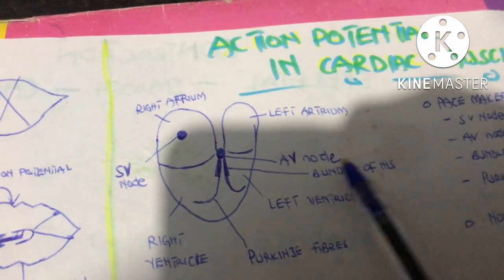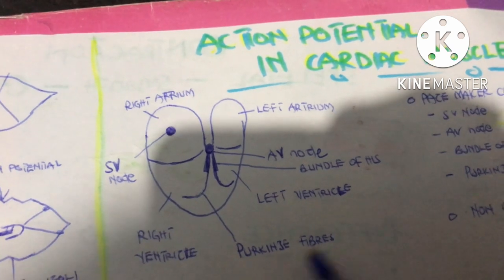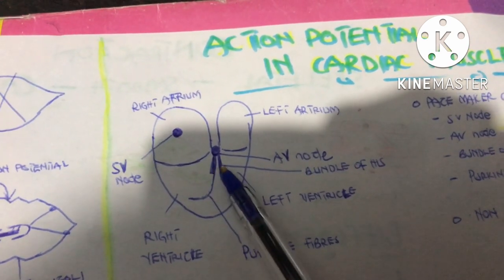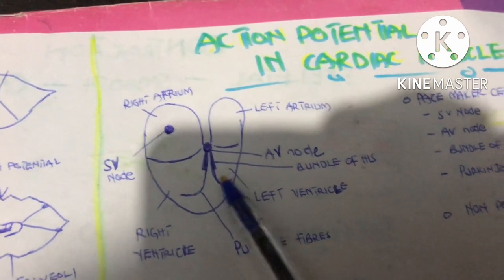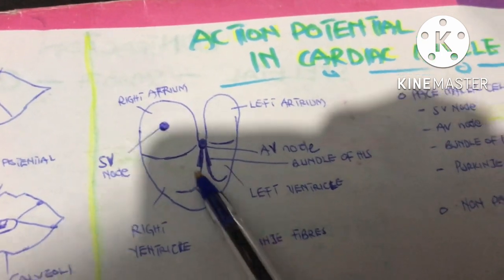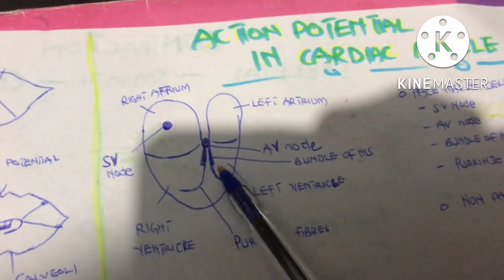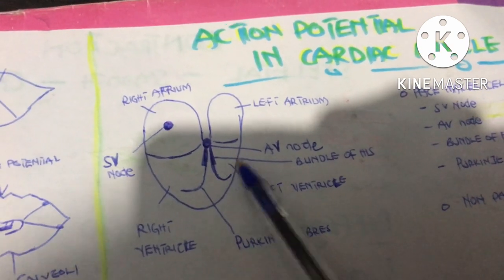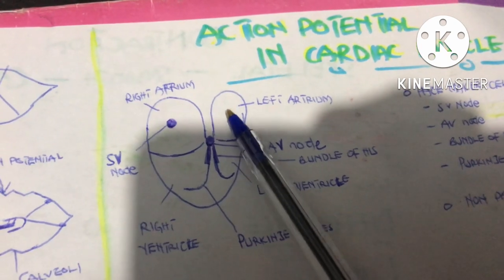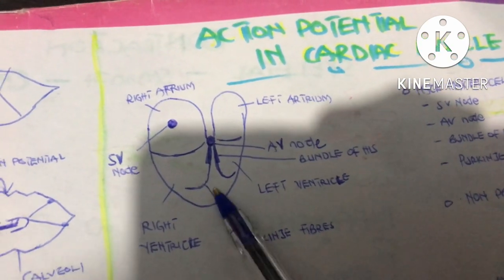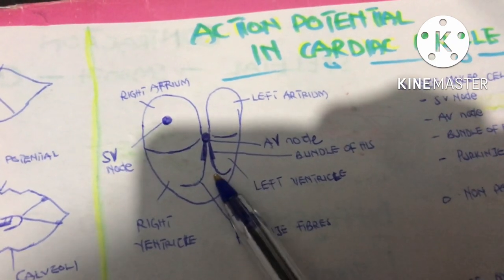After waiting, the AV node gives the action potential to the bundle of His, which then gives it to the Purkinje fibers — right branch and left branch. The right branch supplies the muscles of the right ventricle and the left branch supplies the muscles of the left ventricle. Contraction of the atria occurs simultaneously, and contraction of the ventricles also occurs simultaneously.